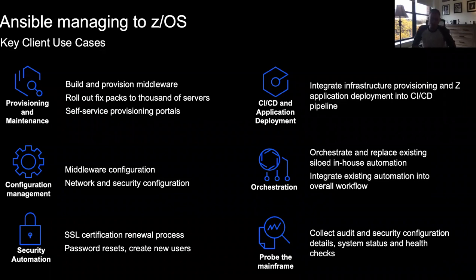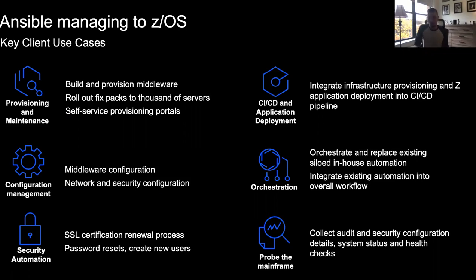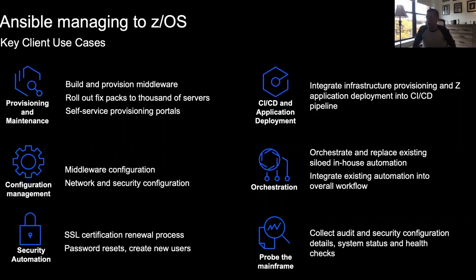Number two from a use case perspective has definitely been in the provisioning and maintenance space. We have a lot of customers looking at automating different SMP/E type tasks — whether that's applying PTFs, running maintenance against software or middleware on z/OS, or automating the provisioning of middleware on their systems. Number three is orchestration — a low-hanging fruit but still very powerful. Keep using your current JCL and REXX, but start calling that in a more modern way through Ansible to tie it into your wider automation strategies.